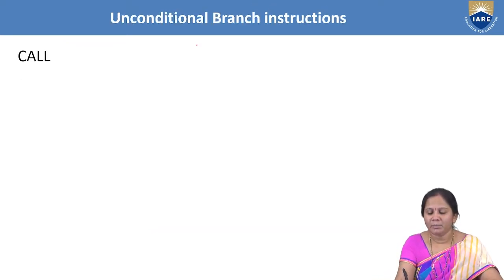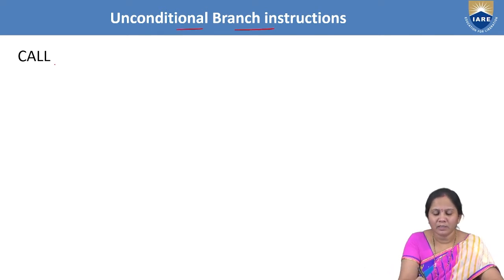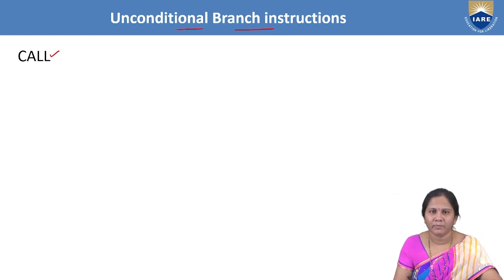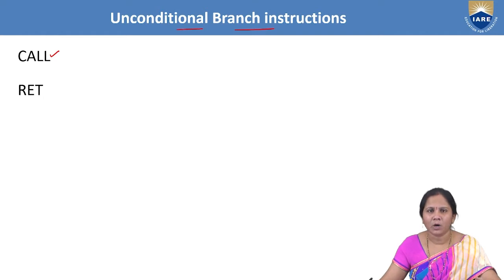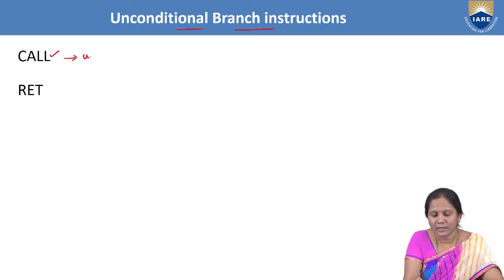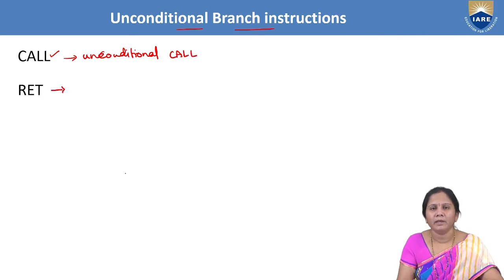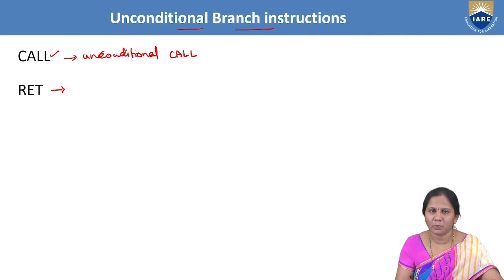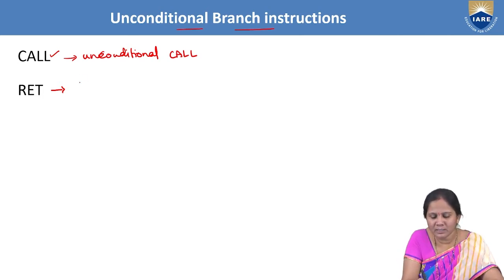Coming to the detailed discussion about the unconditional branch instructions, the first unconditional branch instruction is CALL. When this instruction is executed, the specified address will be called and executed. After executing that subroutine or procedure, the control will be returning to the main program. CALL represents an unconditional call. The next instruction is RET. Whenever we use the CALL instruction to call a procedure or sub-program, at the end of the sub-program we have to write the RET instruction in order to return to the main program. RET is called 'return from the procedure.'